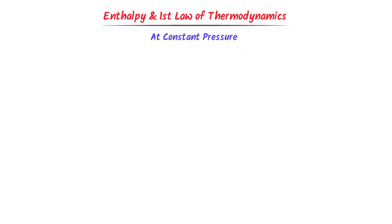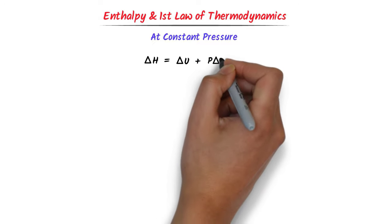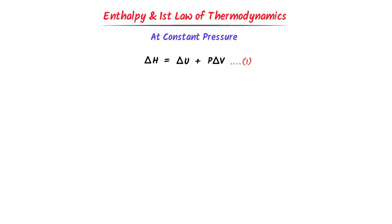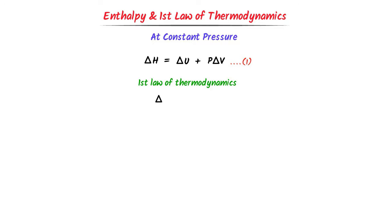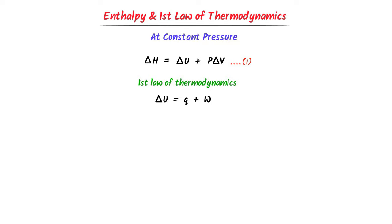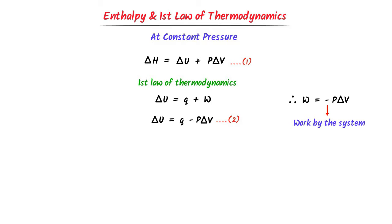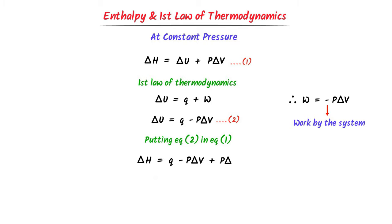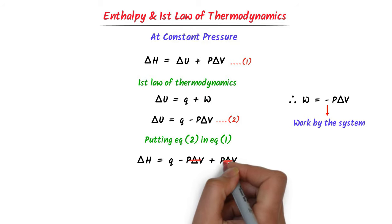Now let's learn the relationship between enthalpy and the first law of thermodynamics. We know that ΔH = ΔU + PΔV — call this equation 1. According to the first law of thermodynamics, ΔU = q + w, and since w = −PΔV (work done by the system), we get ΔU = q − PΔV — call this equation 2. Substituting equation 2 into equation 1: ΔH = q − PΔV + PΔV. The PΔV terms cancel out, giving ΔH = q.